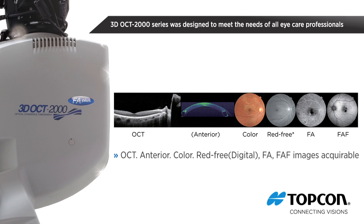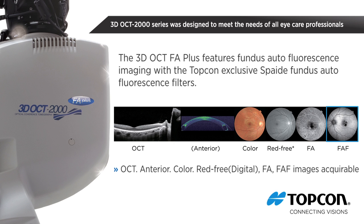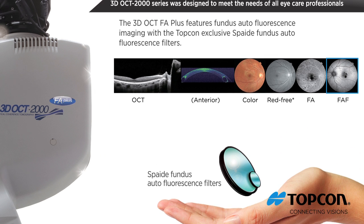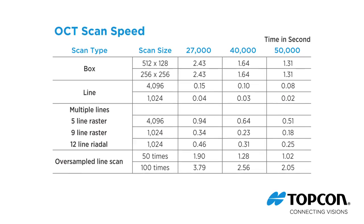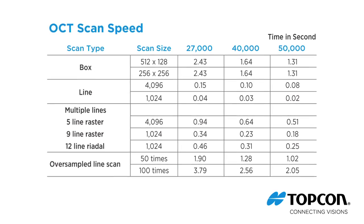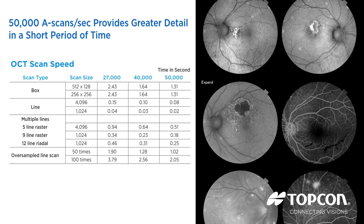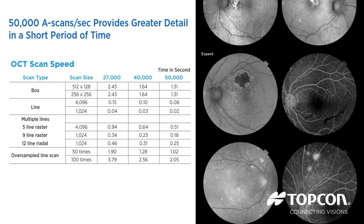The third model is the 3D OCT 2000 FA Plus. This model has all the features of the 3D OCT 2000 FA, but also features fundus autofluorescence imaging with the TopCon exclusive SPADE fundus autofluorescence filters. The enhanced 50,000 A-scans per second allows for faster tomography acquisition and minimizes artifacts generated by eye movements, producing clear cross-sectional SD OCT retinal images.